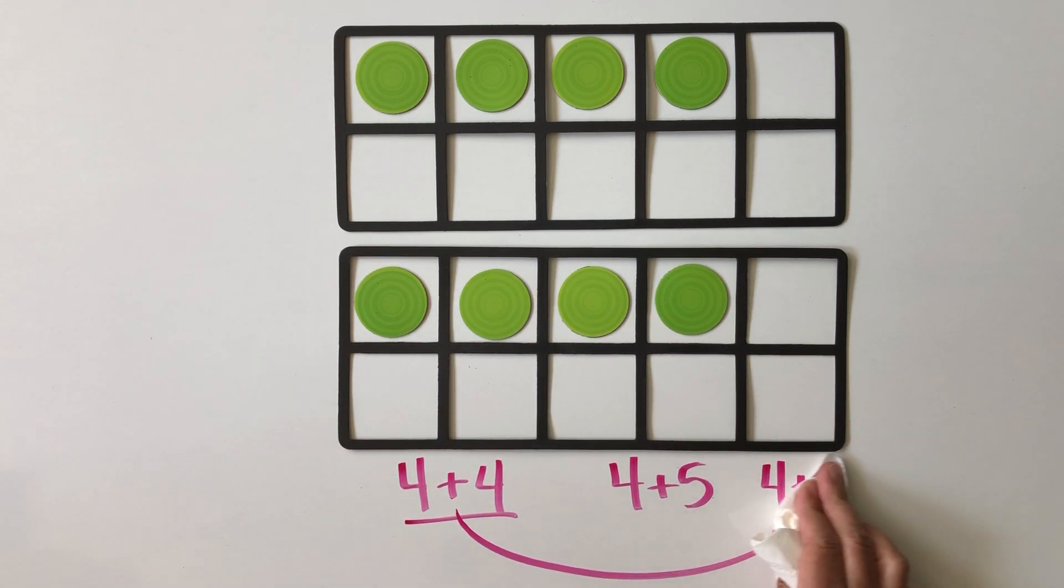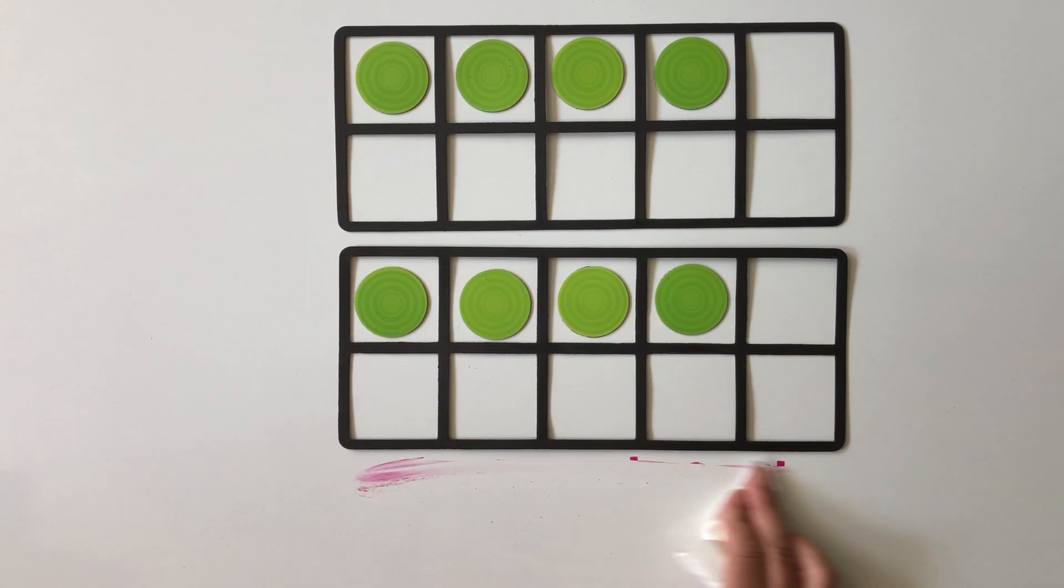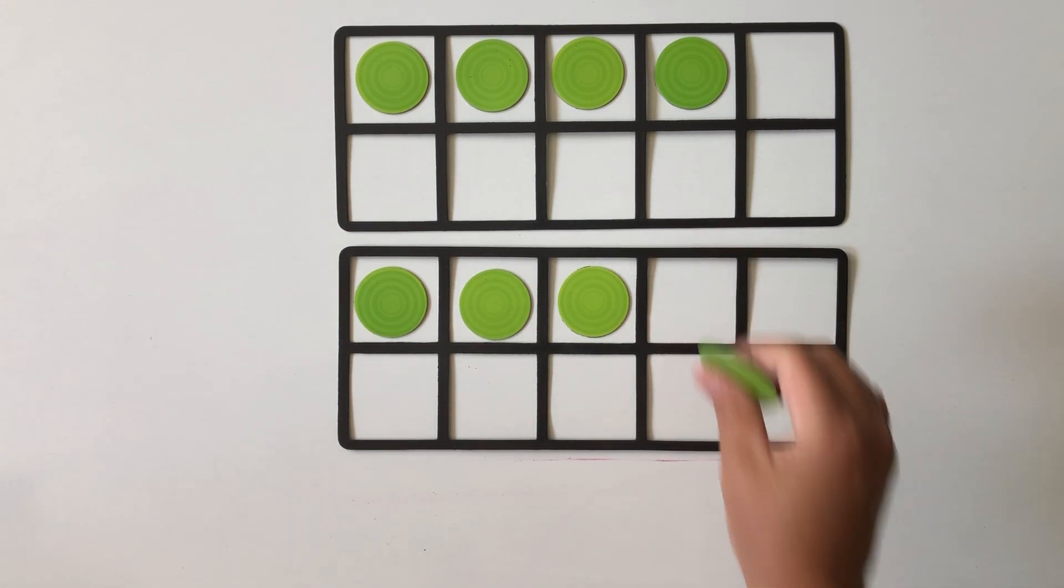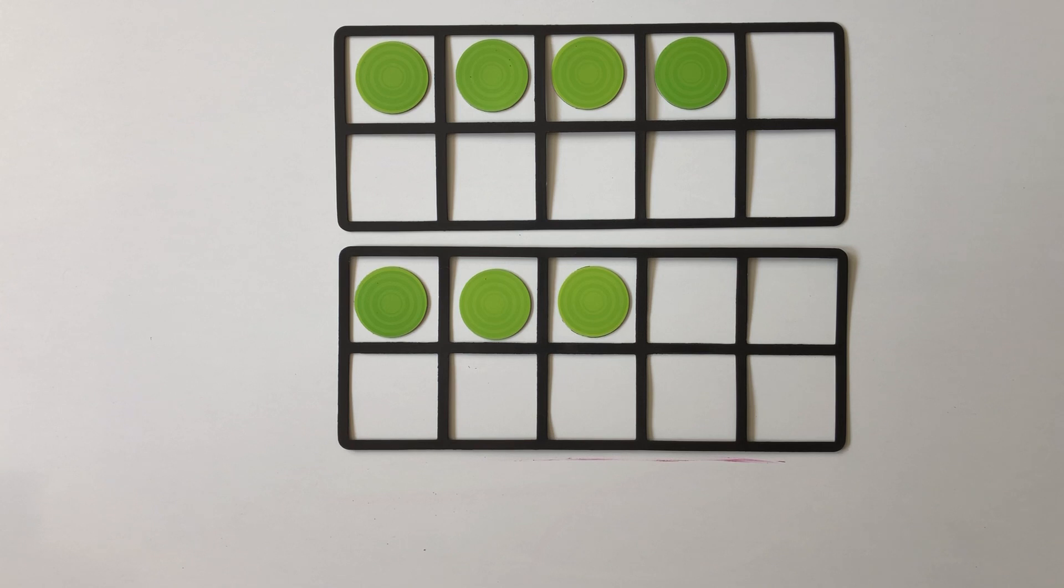What if we start with 4 plus 4, and then I'm just going to get rid of this and take one away? We could think, well, 4 plus 4 was 8, and then we took away one to make 7. So 4 plus 3 equals 7.